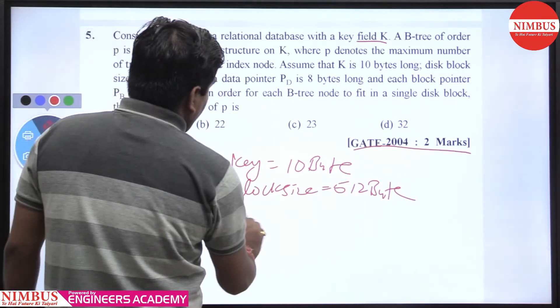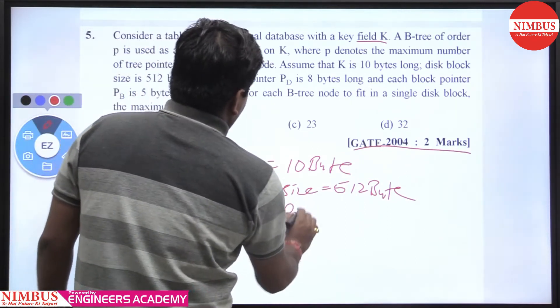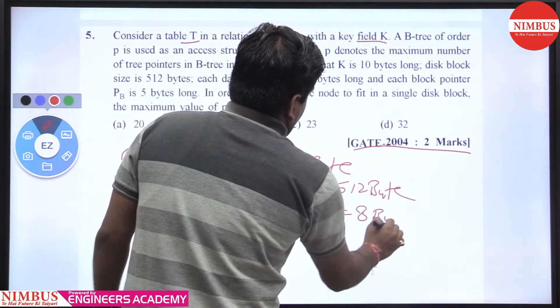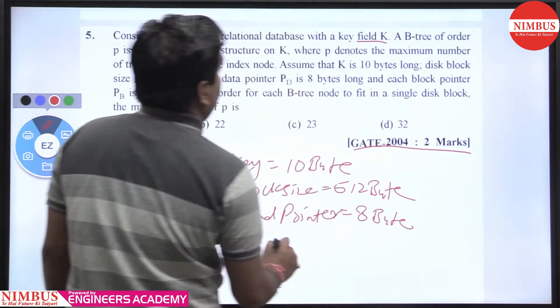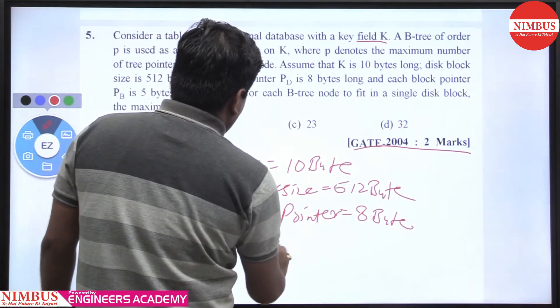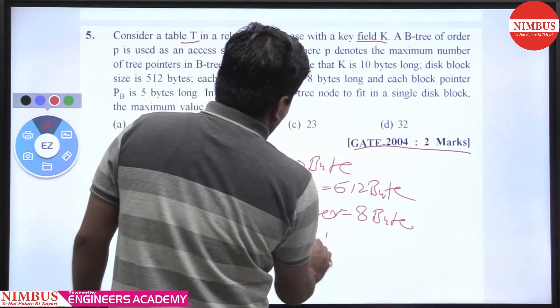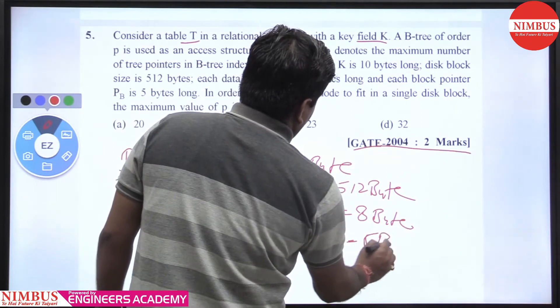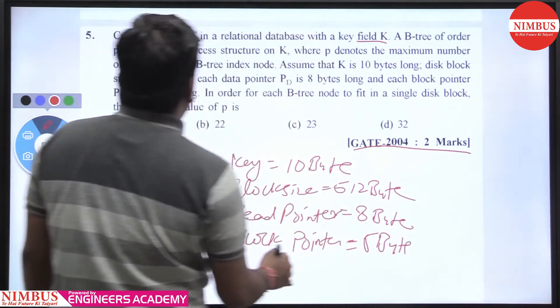Record pointer, the record pointer is 8 bytes, and block pointer is 5 bytes. And what is it asking about? The order.